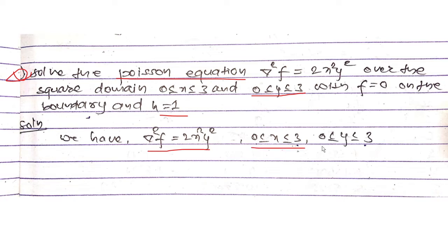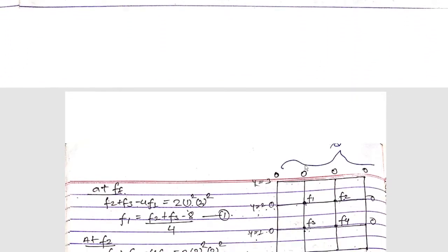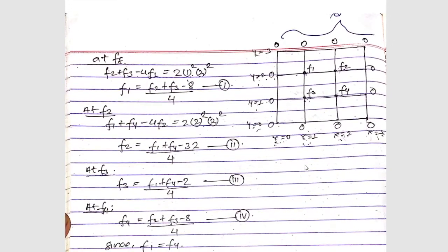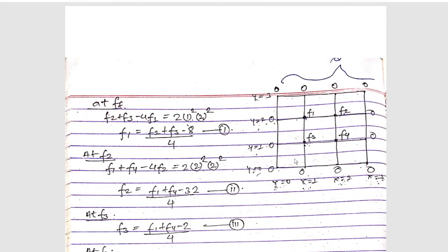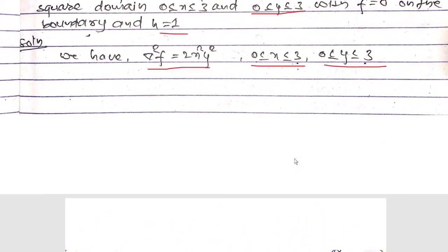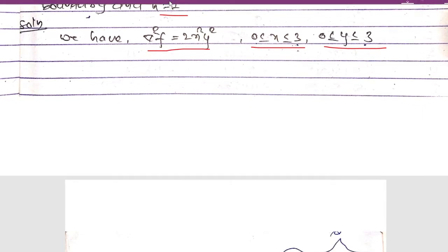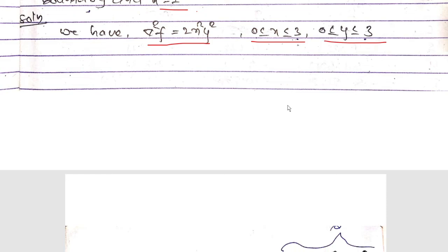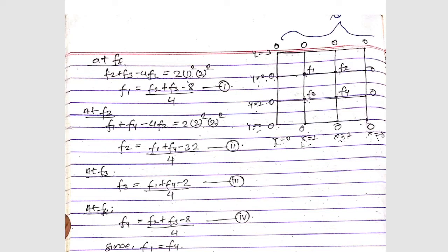From this condition we can draw the grid block. The value of x ranges from 0 to 3 and the spacing is s = 1, and similarly for y from 0 to 3. So we have grid lines at x = 0, 1, 2, 3 and y = 0, 1, 2, 3.